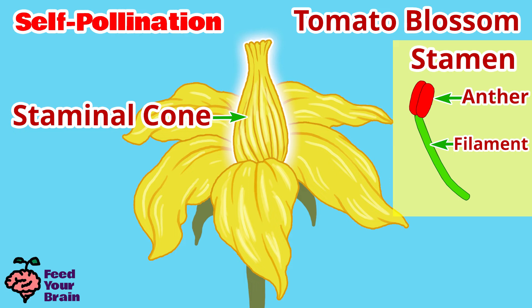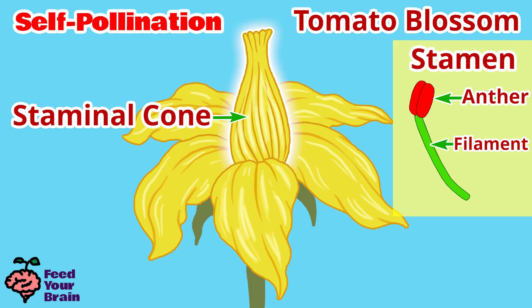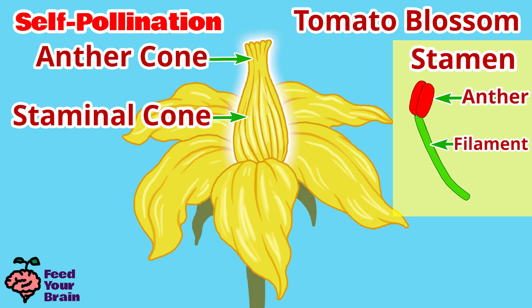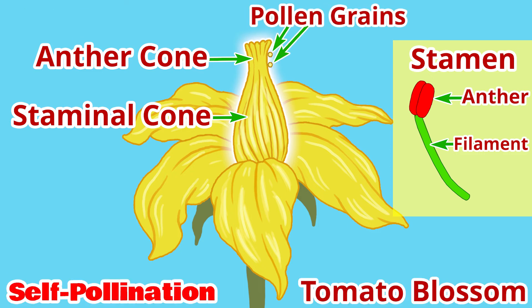At the top is called the anther cone, because the anthers are not separate like in typical flowers — they are squished together in a tube cone shape. This is where the pollen grains are released from the anther cone. The location of the pollen grains on a typical anther are located here.